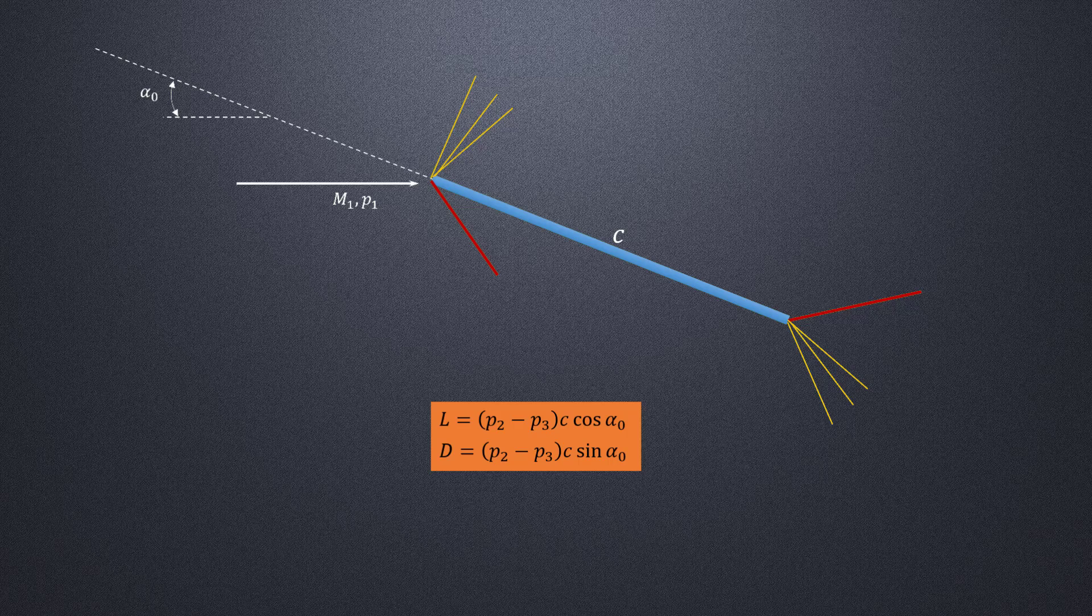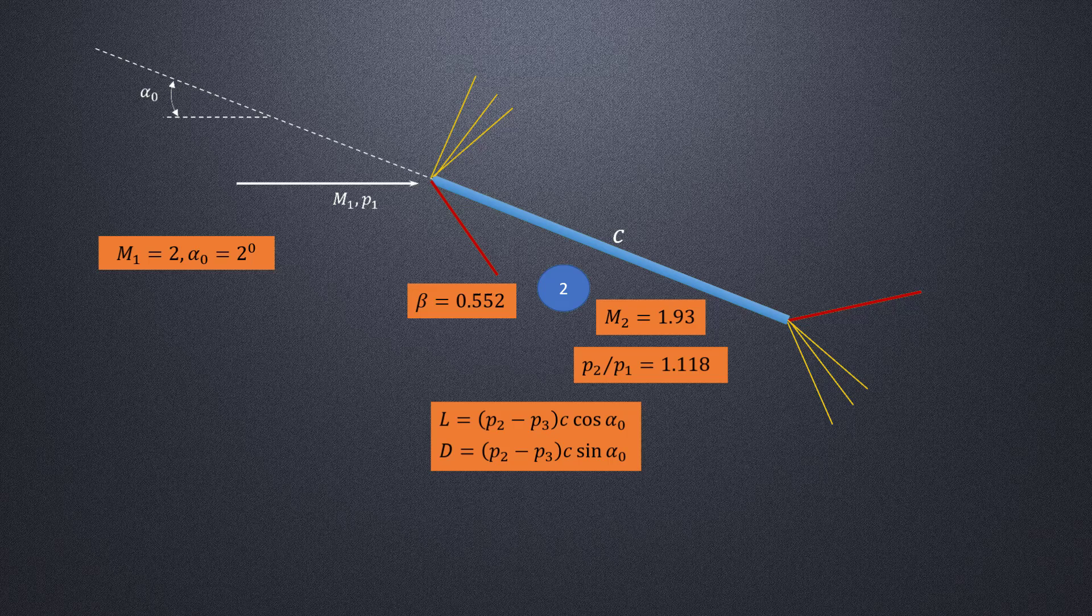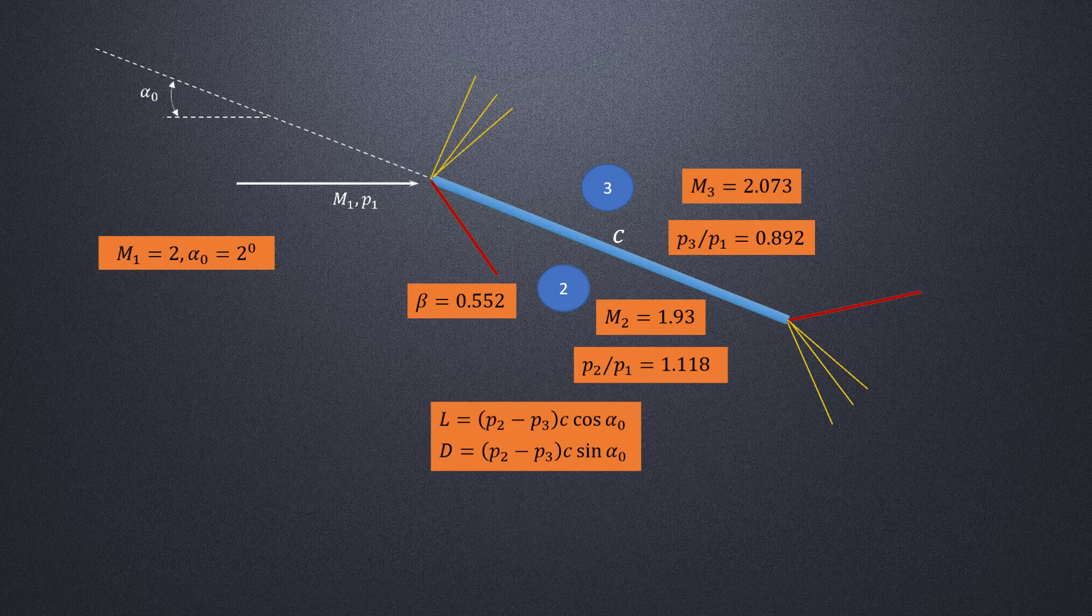If the freestream Mach number is 2 and the angle of attack is 2 degrees, we can follow the same process as we did for the diamond shape airfoil and obtain the Mach numbers and pressure ratios in the different regions as shown here. Using these, the lift and drag coefficients can be calculated as shown.